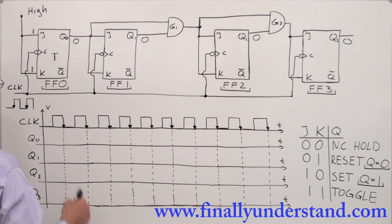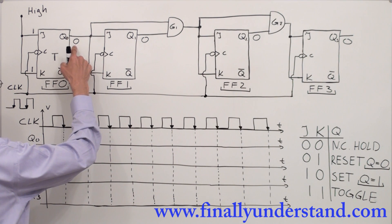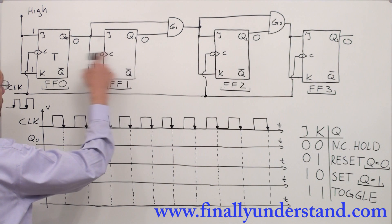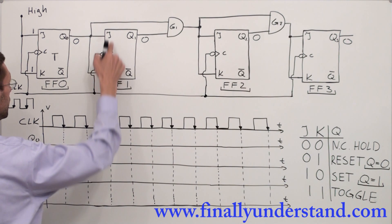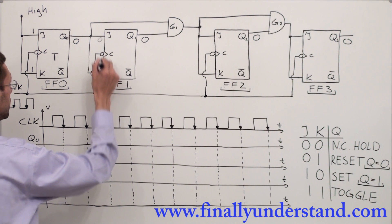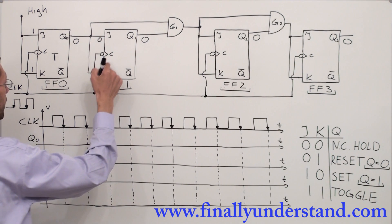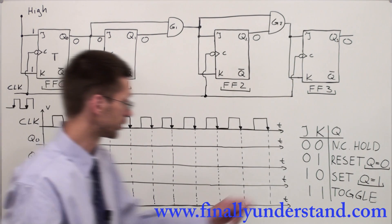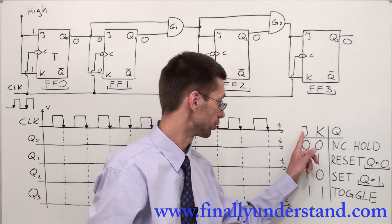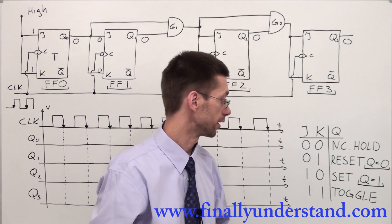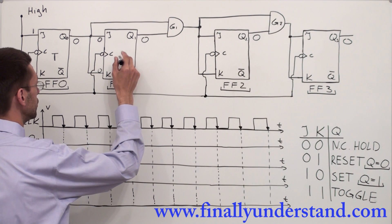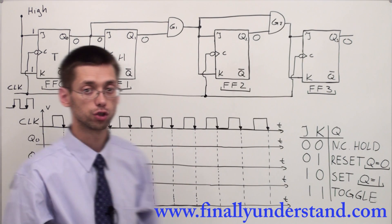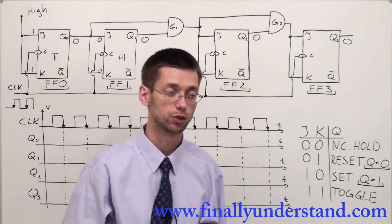Q0 has a value of 0, because we assume our initial state is 0. This 0 goes to both J and K inputs of flip-flop 1, so both are 0 and 0. Any time a JK flip-flop receives 0 and 0 on its JK inputs, it is set to hold mode. I'll write the letter H to represent hold mode, meaning no change.